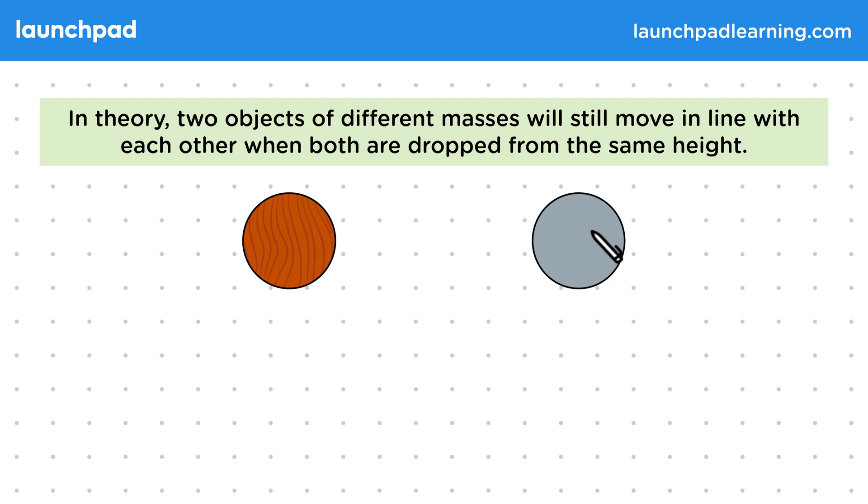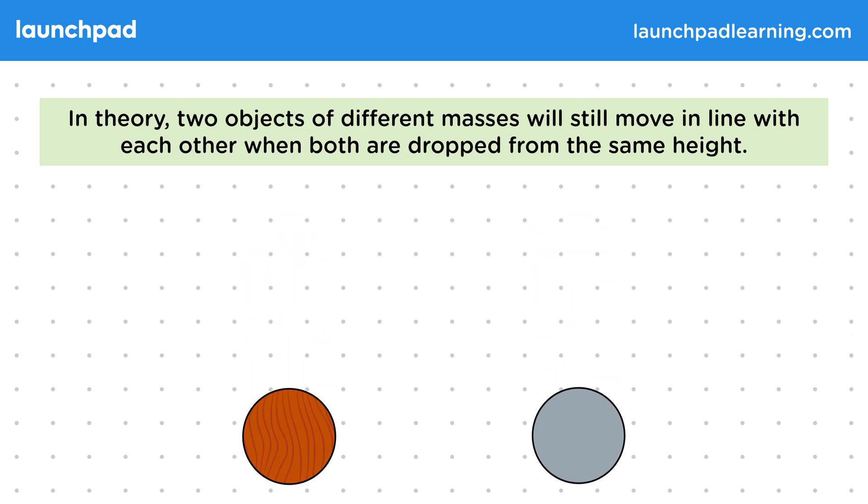This is an experiment supposedly done by the Italian physicist Galileo, where he dropped balls like this off the Leaning Tower of Pisa. You would expect the heavier metal ball to fall faster, but when we drop them we actually see them fall in line with each other.